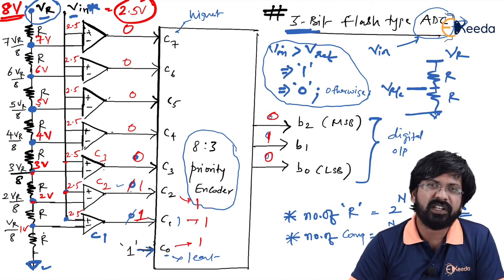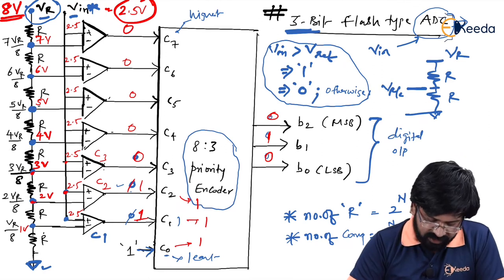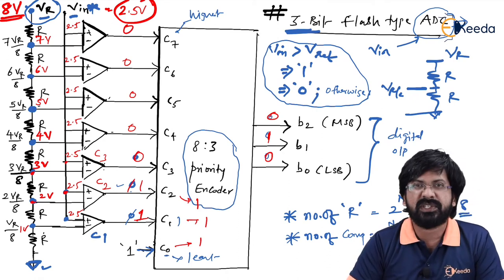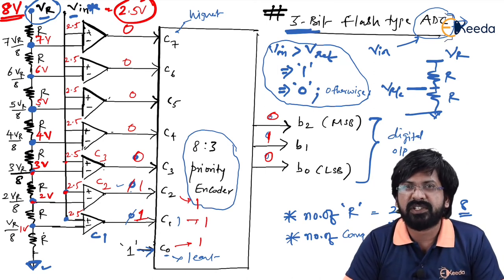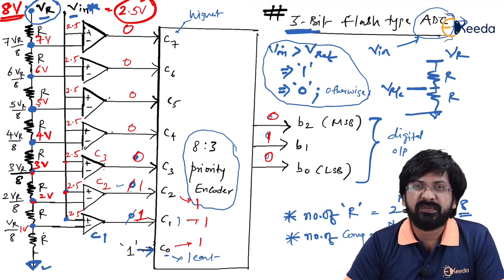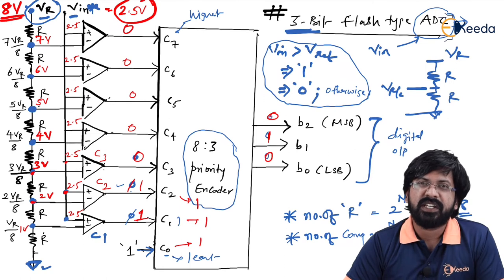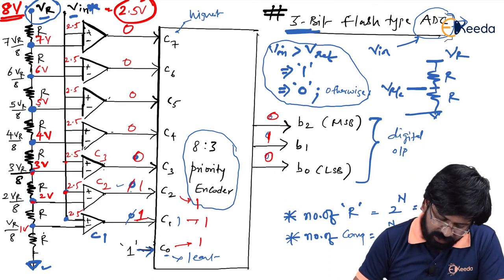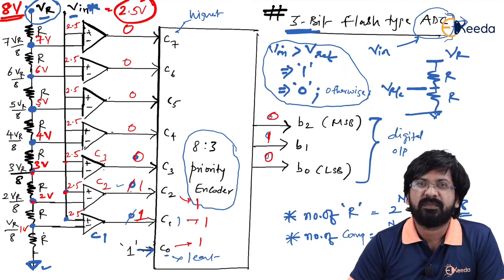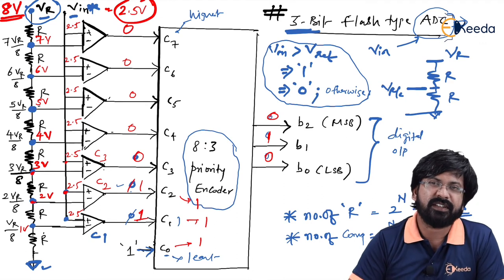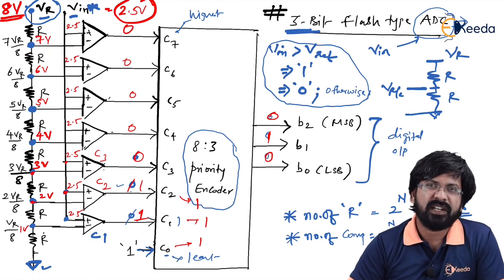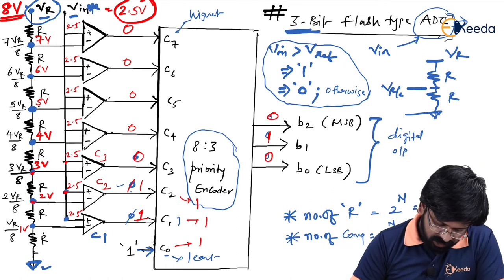The disadvantage is more hardware. For just a 3-bit ADC you need 7 comparators and 8 resistors. For an 8-bit ADC, you would need 255 comparators and 256 resistors. Because of this hardware complexity, flash ADC is not practical; instead, successive approximation resistor (SAR) type ADC is used in standard integrated circuits, as it is accurate and requires less hardware.